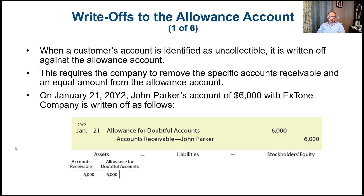We'll talk about that in a moment. The allowance for doubtful accounts is a contra asset account — it belongs to assets but has an opposite nature and carries a credit balance. So whenever we're using part of it, we're going to debit it.